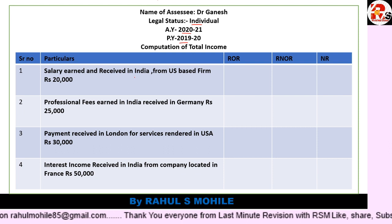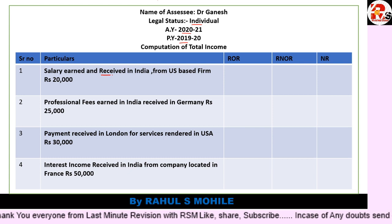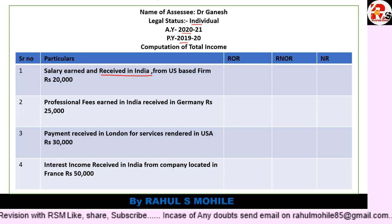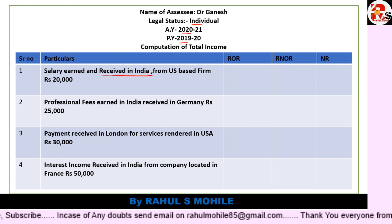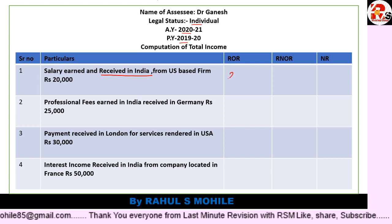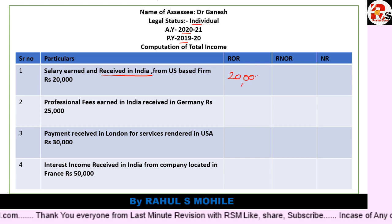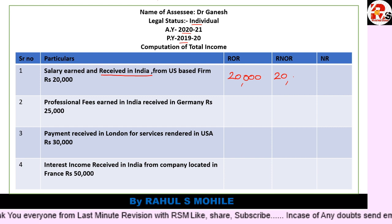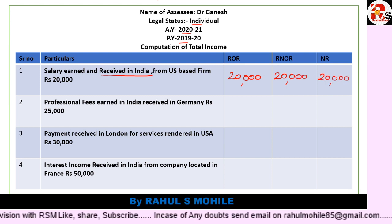Point one: salary earned and received in India from a US-based firm. As I told you earlier, if anything is received in India, accrued in India, or deemed to accrue or arise in India, it will be taxable in all columns. So salary earned and received in India — ₹20,000 — write 20,000 in all three columns: ROR, RNOR, and NR. That's all you need to do — no working notes required.